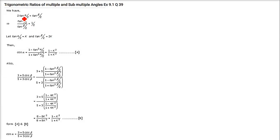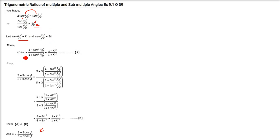Next we have 2 tan(α/2) / tan(β/2) and we have to prove cos α = (3 + 5cosβ) / (5 + cosβ). Take the ratio tan(α/2) / tan(β/2) = 1/2, so let tan(α/2) = k and tan(β/2) = 2k. Use cos α = (1 − tan²(α/2)) / (1 + tan²(α/2)), giving cos α = (1 − k²) / (1 + k²).